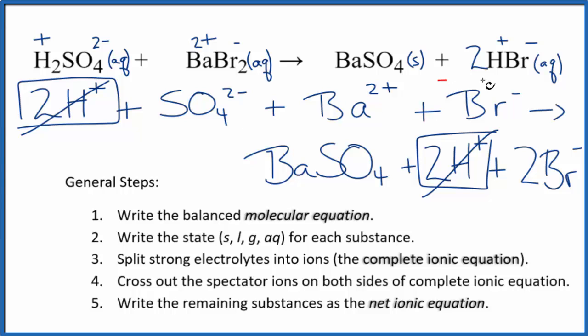I also have two bromide ions here, and I should have two bromide ions here because the 2 applies to everything. So two bromide ions here and two here. Cross that out. What's left is the net ionic equation for H2SO4 plus BaBr2.